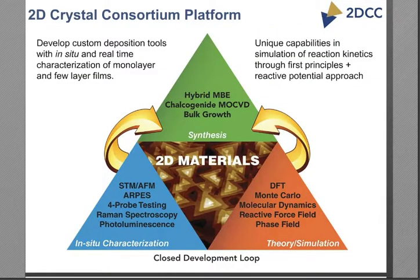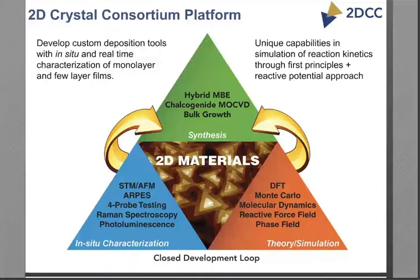Here again is the overview of the 2D crystal consortium platform. We want to develop custom deposition tools with in-situ and real-time characterization of monolayer and few-layer film growth. We also want unique capabilities in simulation and reaction kinetics, combining first-principles or reactive potential approaches with experiments. What I'm going to be covering today is what you see in the green triangle — this hybrid MBE approach that we believe gives us quite a bit of an advantage when we are tasked to grow transition metal chalcogenides. I also want to show on an example how experiment and simulation can work together, in collaboration with Adri van Duin's group here at Penn State.